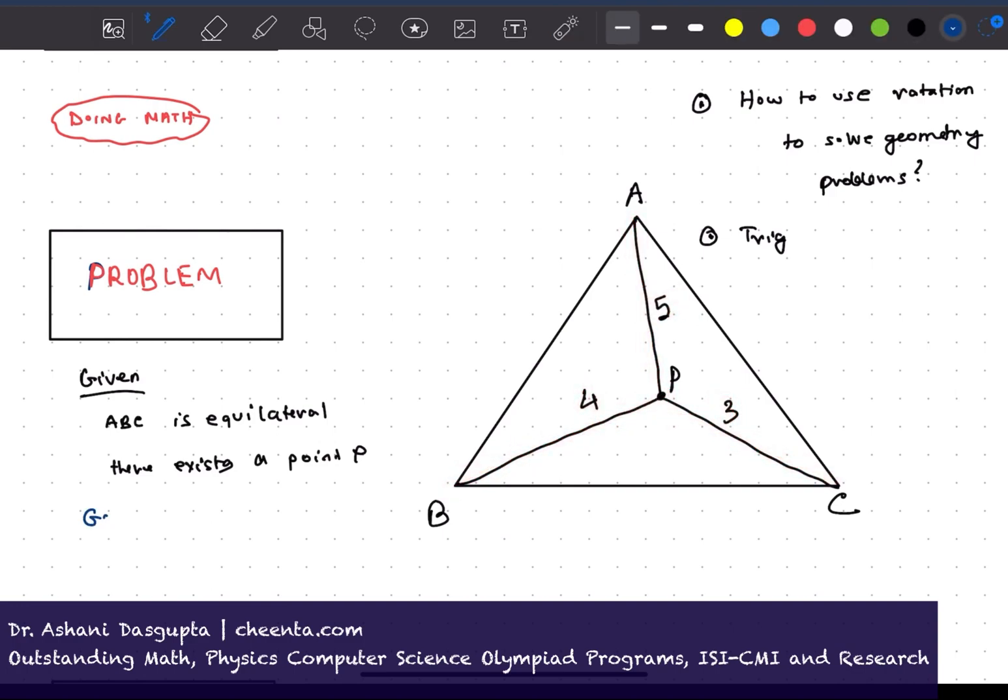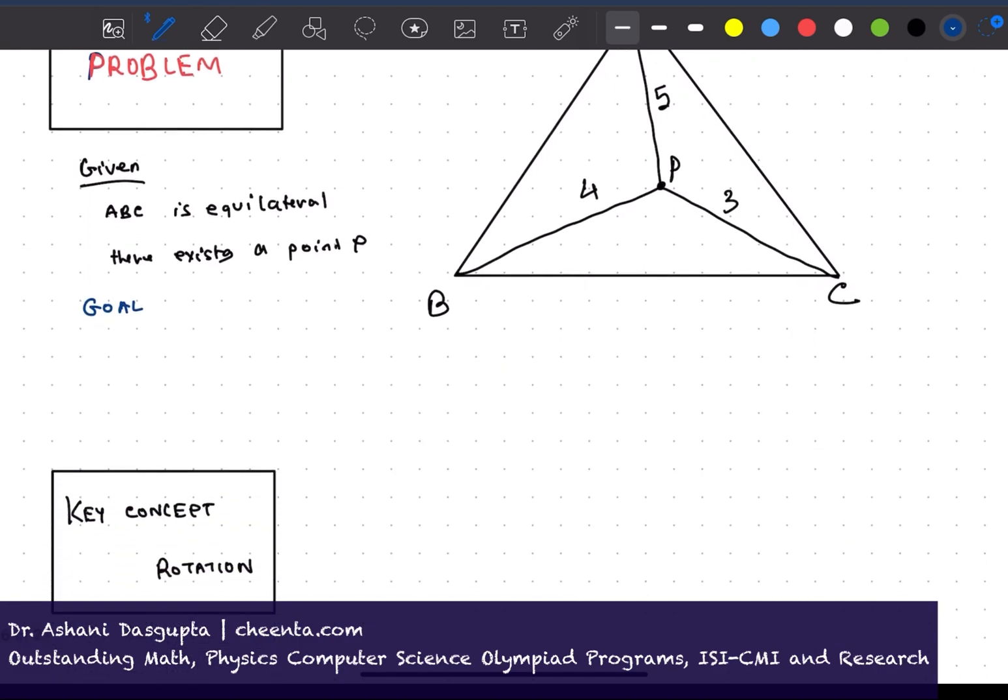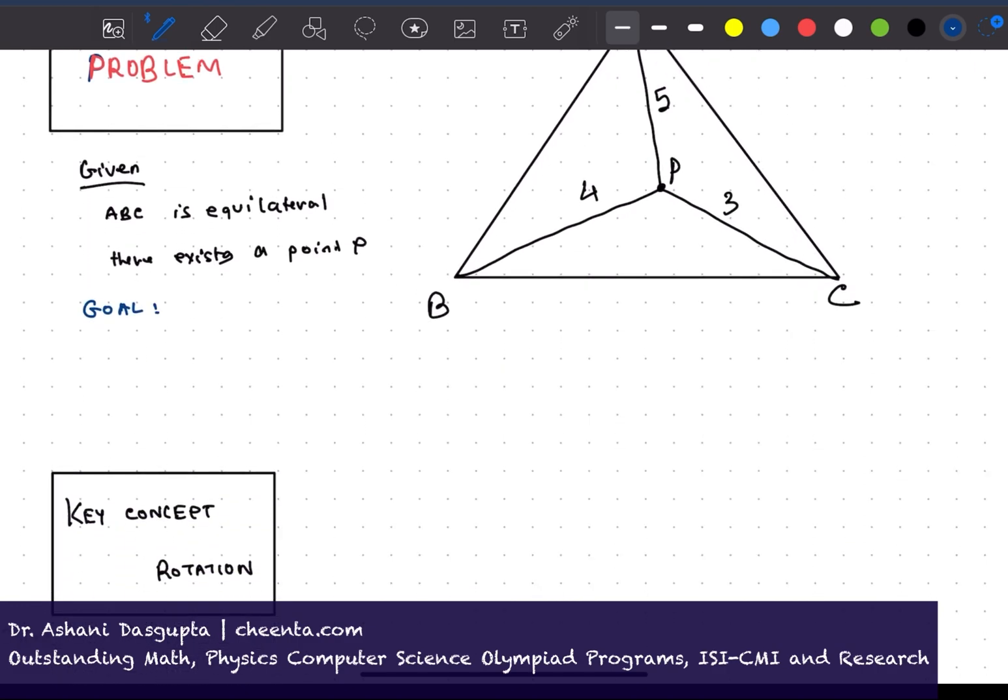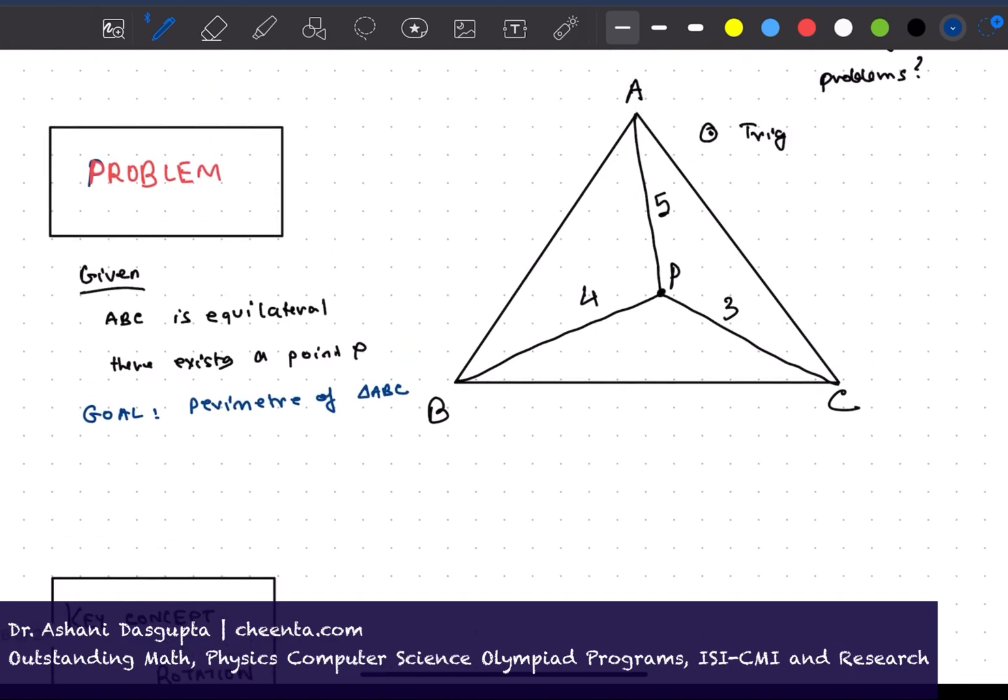Now our goal is to find out perimeter of triangle ABC. So since ABC is an equilateral triangle, it's sufficient to find just one side. If we can find out the length of one side, we will be done.